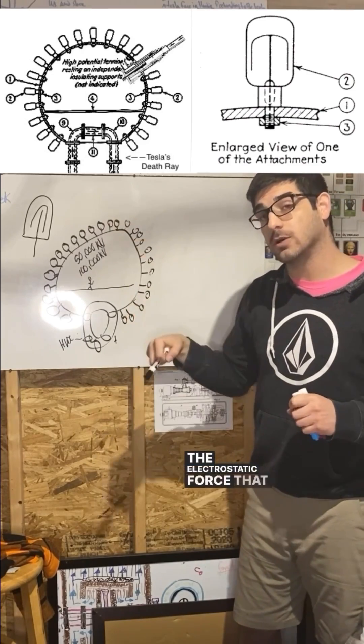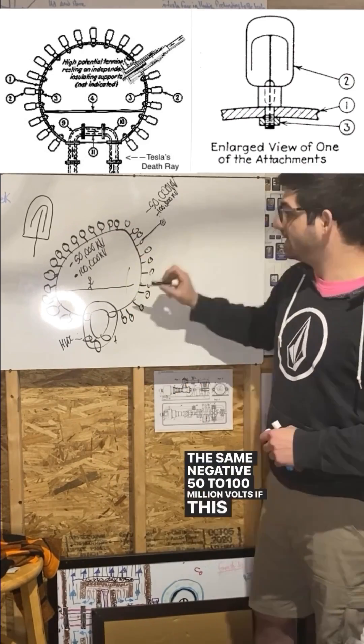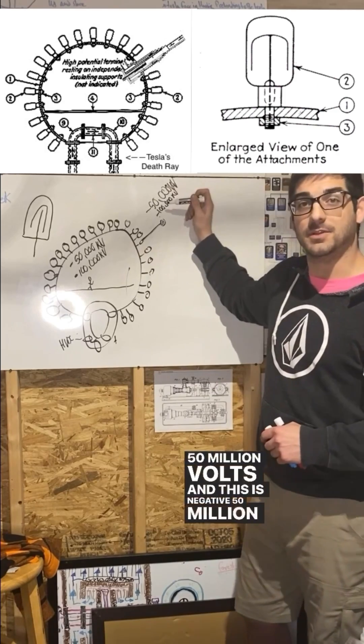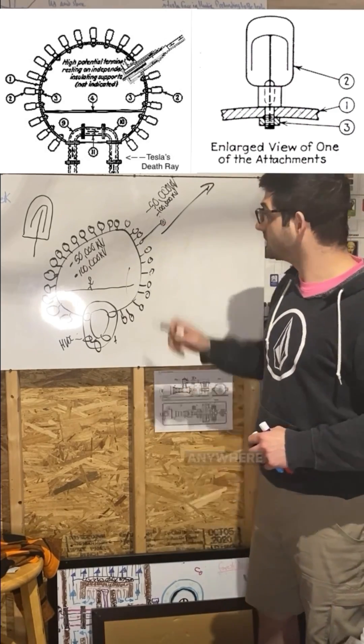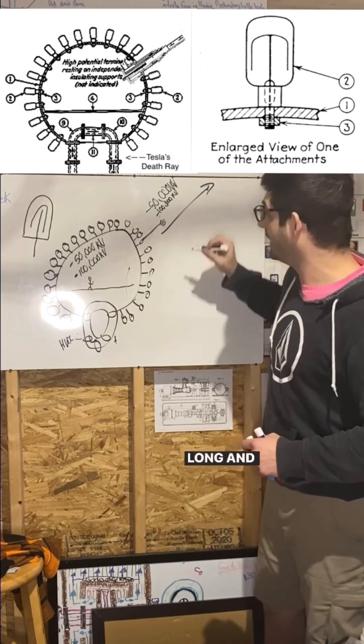If this is negative 50 million volts and this is negative 50 million volts, what's going to happen? This will move very fast with a lot of force. If these are the same charge, these are not staying near each other for very long.